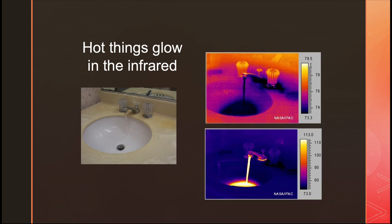So now you know that hot things glow in the infrared. Which one shows the hot water — the top or the bottom? Of course it's the bottom. You can see the base of the faucet and the basin heating up. Even though the hot water is on, the base of the cold water faucet is still cold.